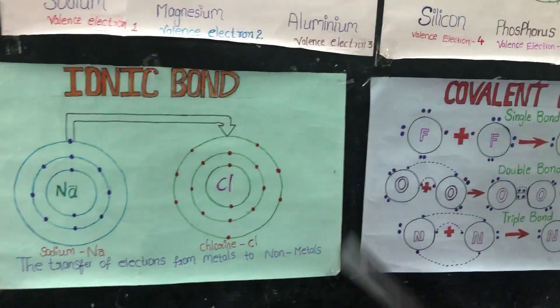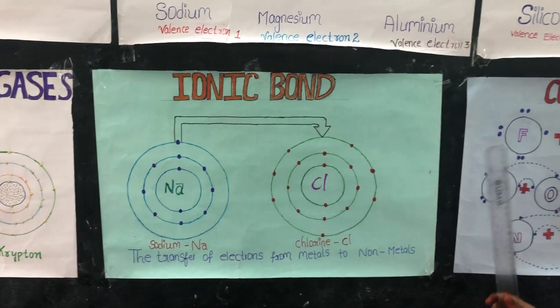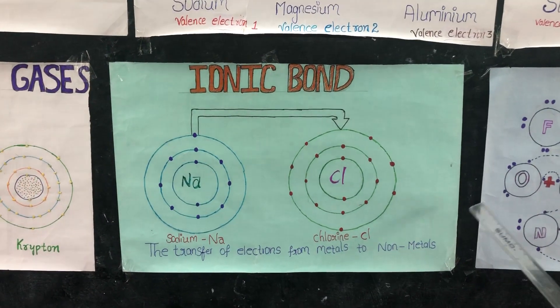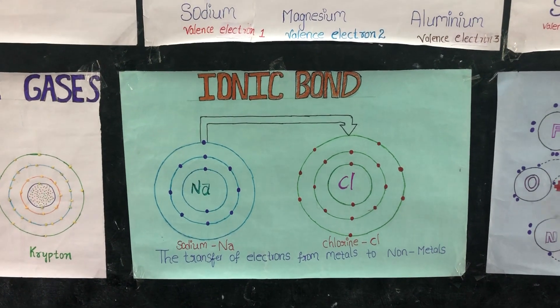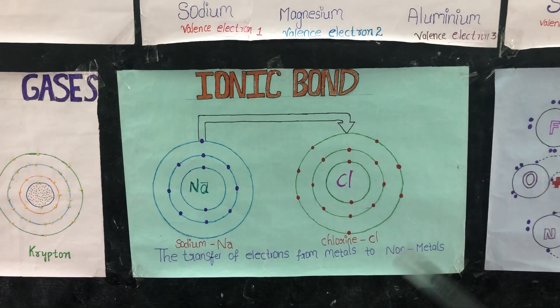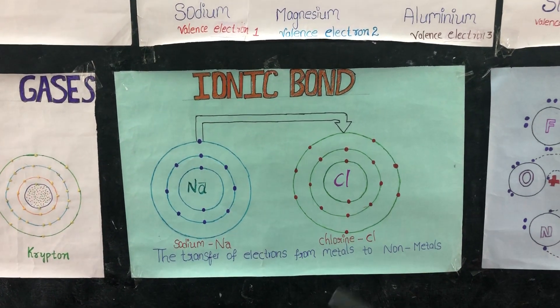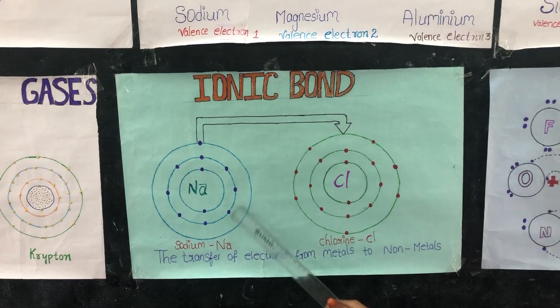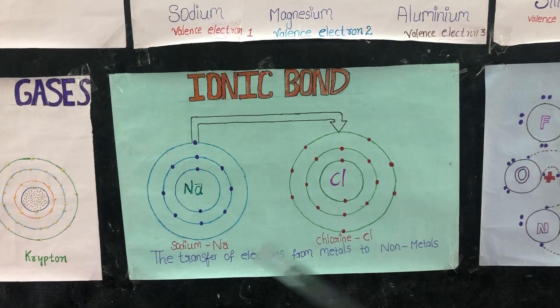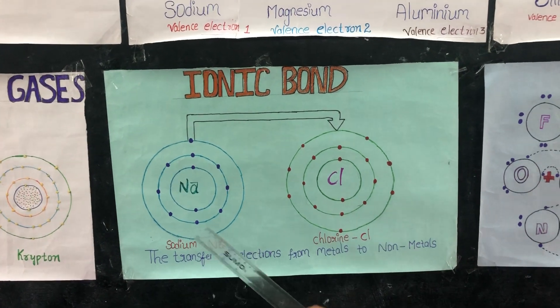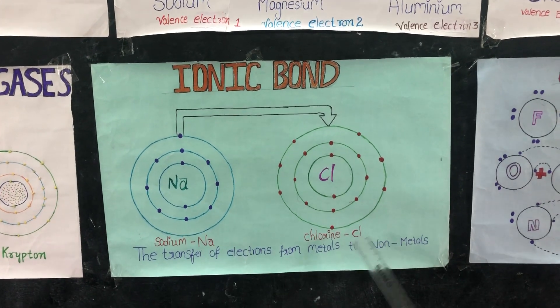In ionic bond, Kossel proposed the ionic bond. An ionic bond is formed between 2 dissimilar elements due to the transfer of electrons from metals to non-metals. Here the example is sodium and chlorine.